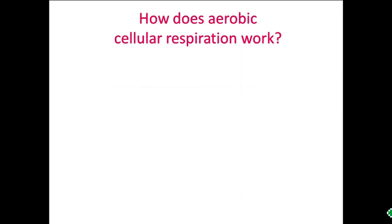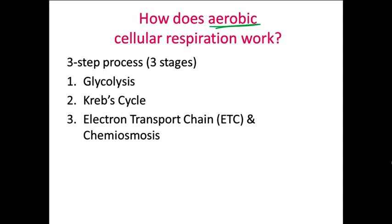Aerobic cellular respiration is a three-step process or three stages. First is glycolysis, then the Krebs cycle, and then something called the electron transport chain, or ETC, and chemiosmosis. We're going to go through each one and talk about what happens and how they are connected to each other. Remember, the whole point is to make ATP, so try not to lose track of that fact as we go through this.